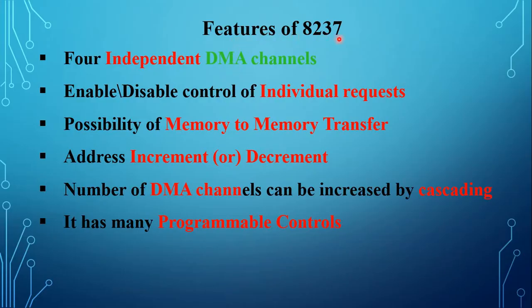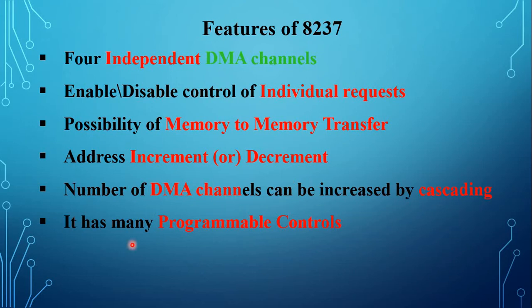These are the features of the 8237. It has four independent DMA channels, enable and disable control of individual requests, possibility of memory-to-memory transfer, address can be incremented or decremented, the number of DMA channels can be increased by cascading, and it has many programmable controls.